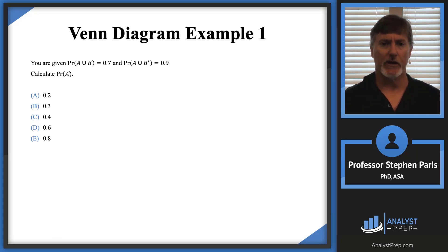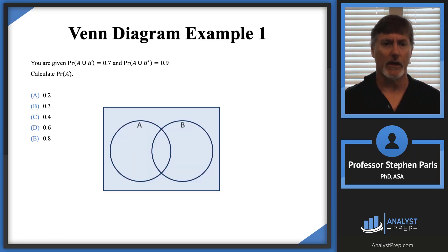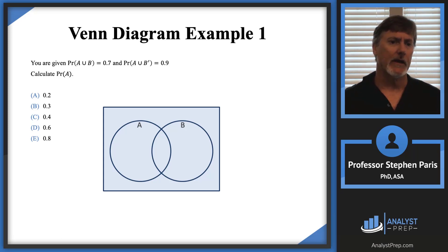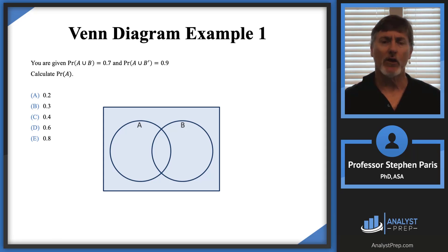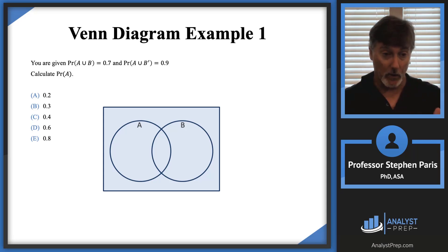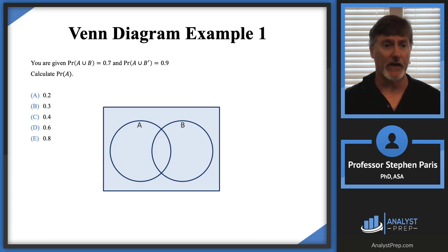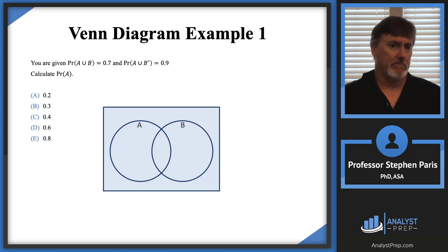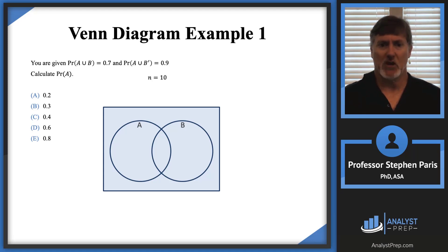I'm going to use a Venn diagram. When I set it up, I need to choose a starting number for my sample space since I'm not told how many people are in the survey. Looking at the probabilities and answer choices, they're all at one decimal place. So if I start with 10 in the survey, that moves all the decimals one place over and I'm dealing with integers.